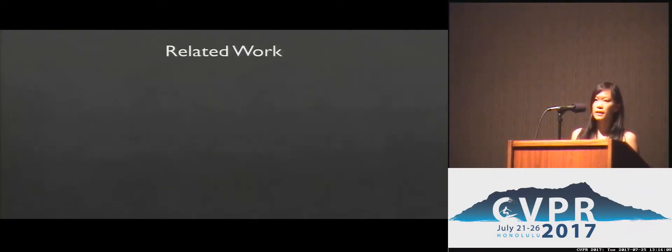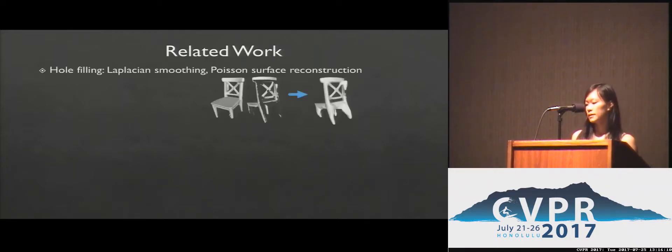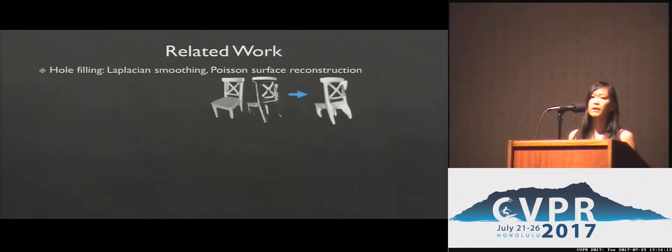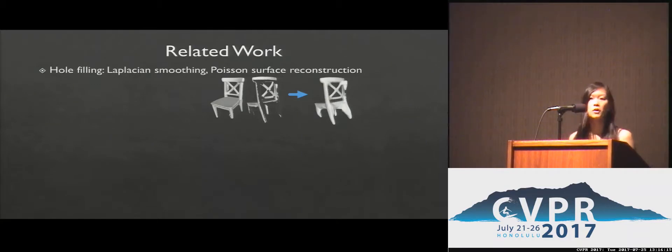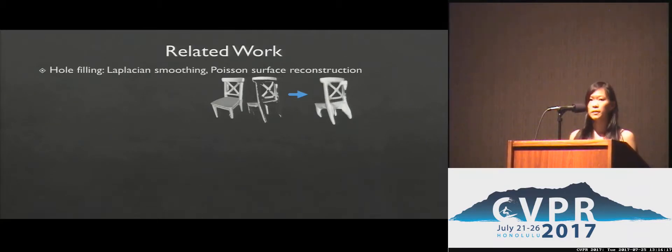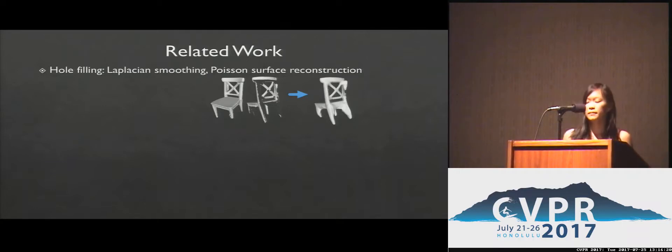Previous work in shape completion has taken several different approaches. Hole filling approaches, like Poisson surface reconstruction, are very good at filling in small holes, but have no way of inferring missing global information, like the chair legs here.